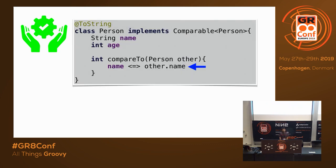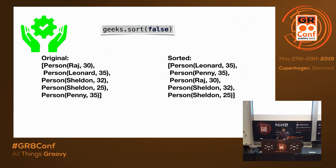Using the spaceship operator to implement Comparable reduces the implementation down to one line, rather than writing several if-else statements. You would call geeks.sort; without passing a Boolean argument it manipulates the original collection, but if you pass false, it returns a new sorted list without changing the original collection.